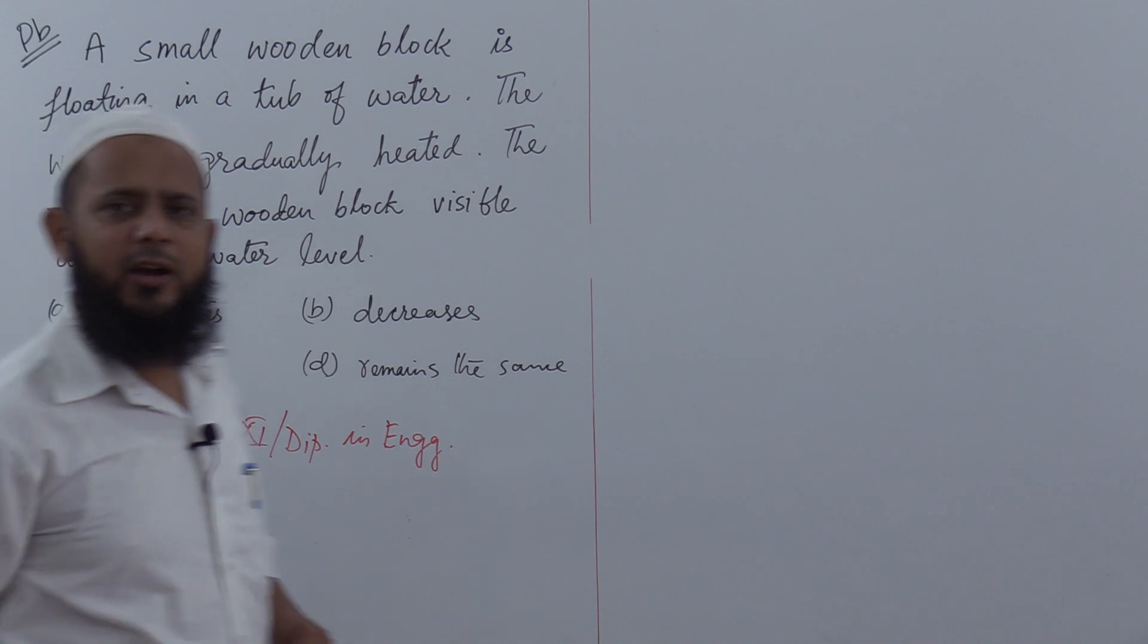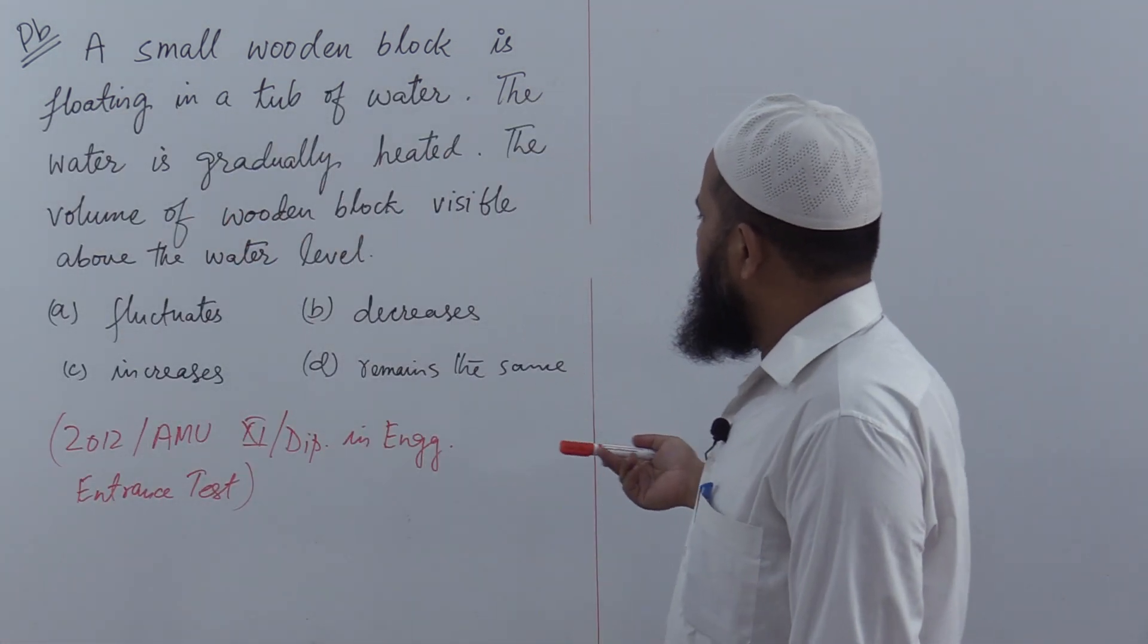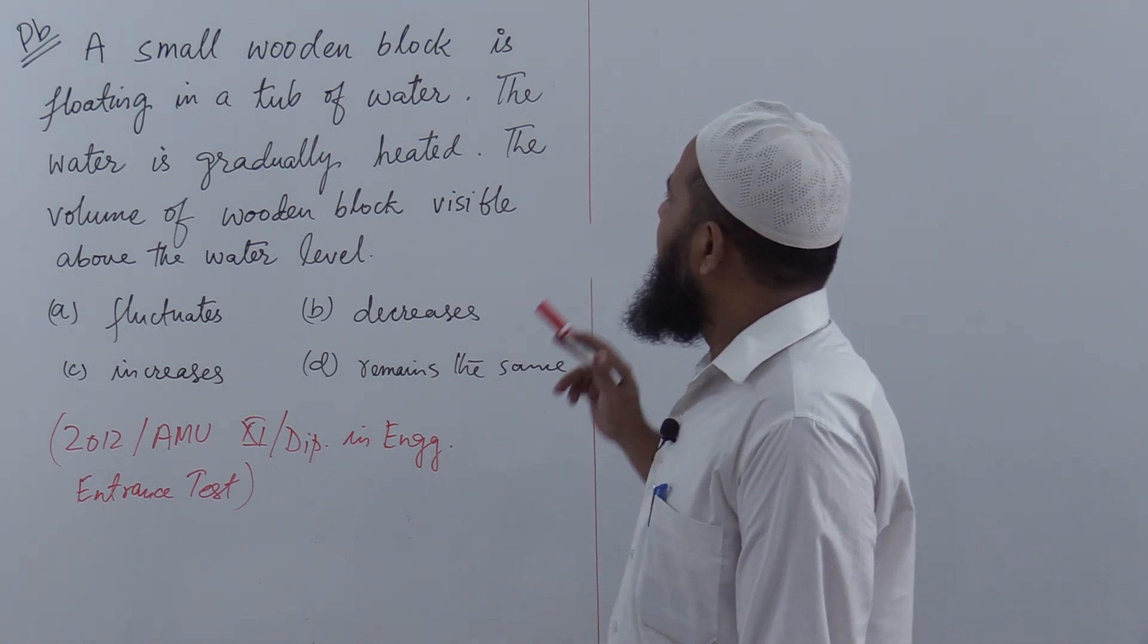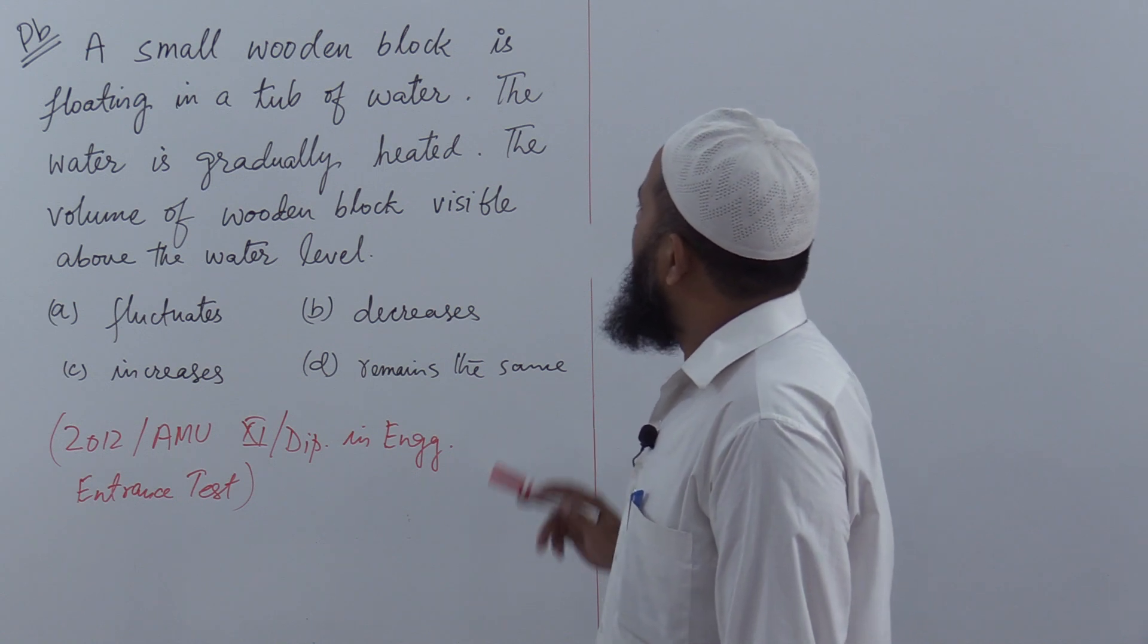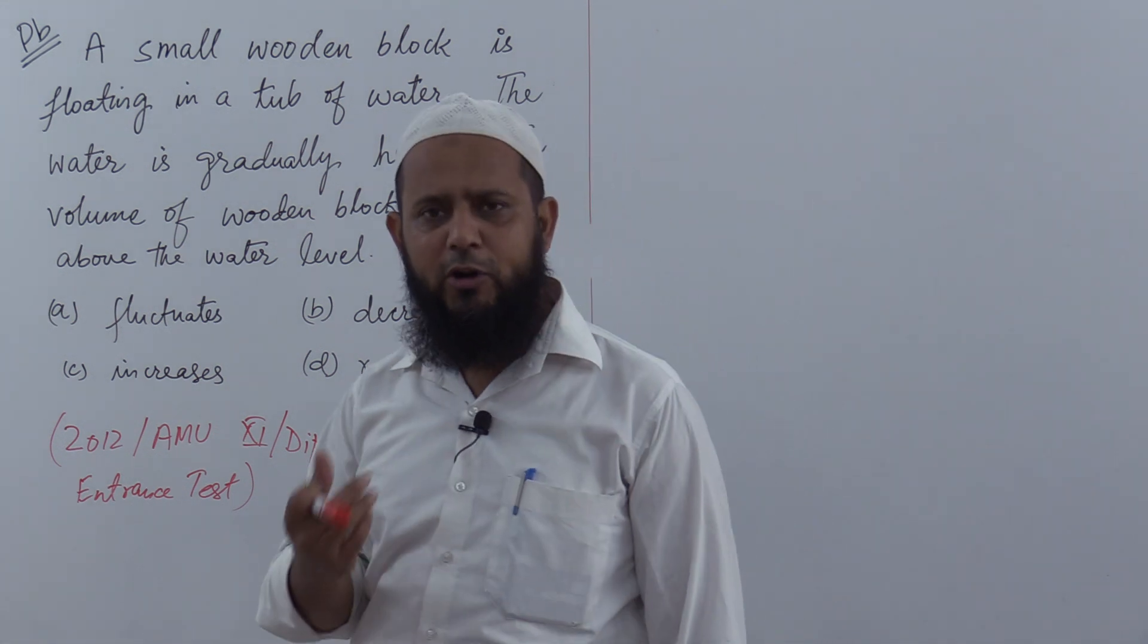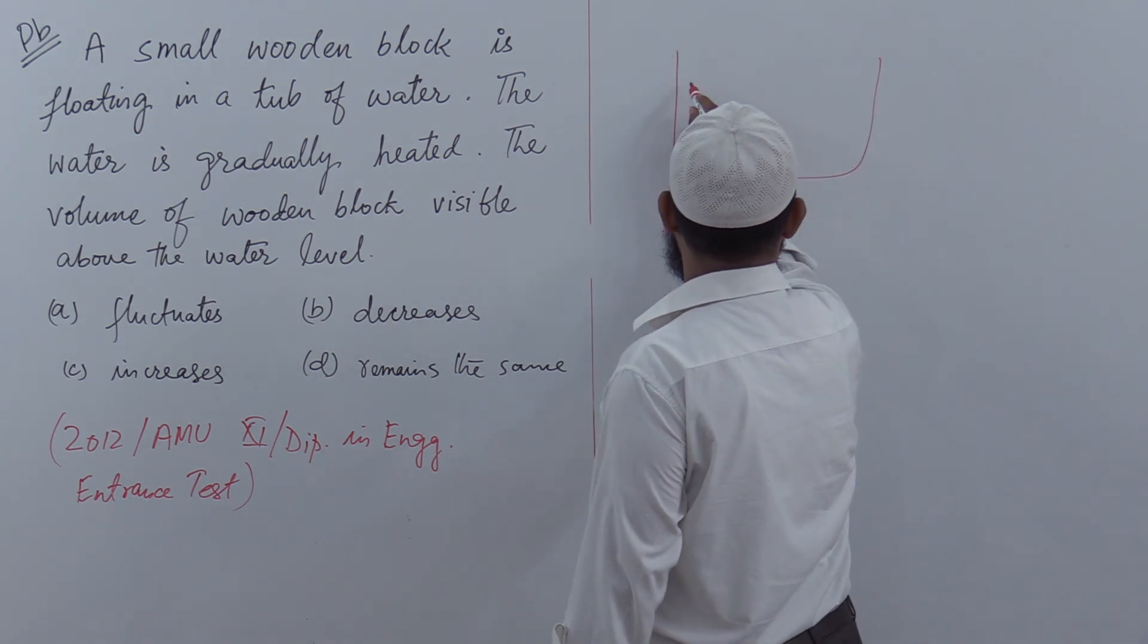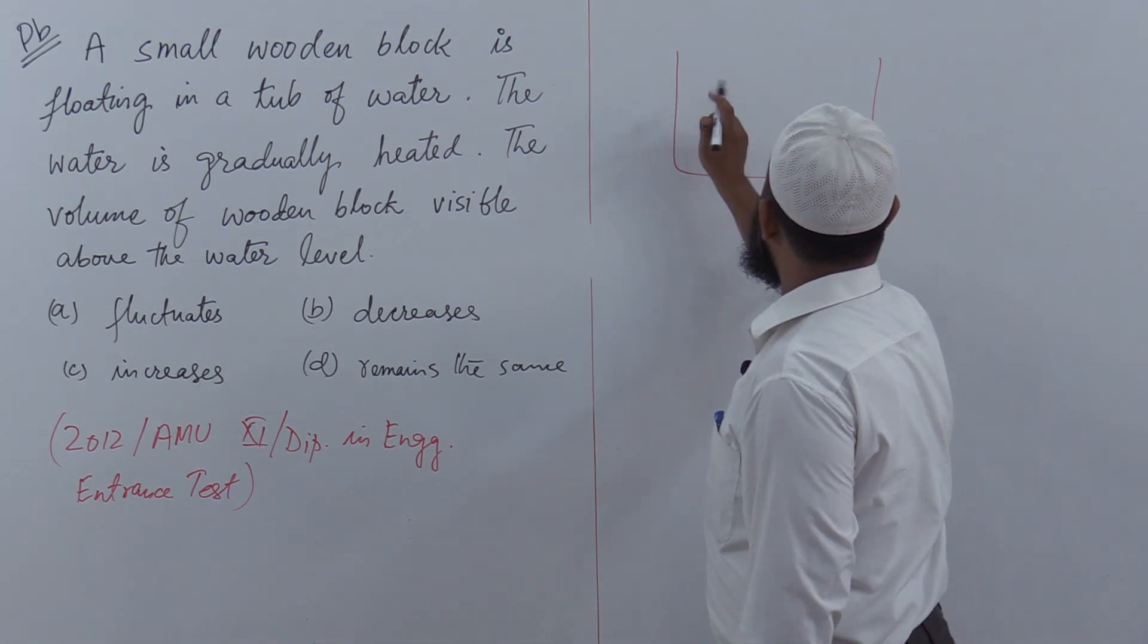Dear students, we have this question from 2012 AMU 11th diploma engineering entrance test. A small wooden block is floating in a tub of water. The water is gradually heated. What happens to the volume of wooden block visible above the water level? A small wooden block. Okay, a tub with water, let's draw the water level.